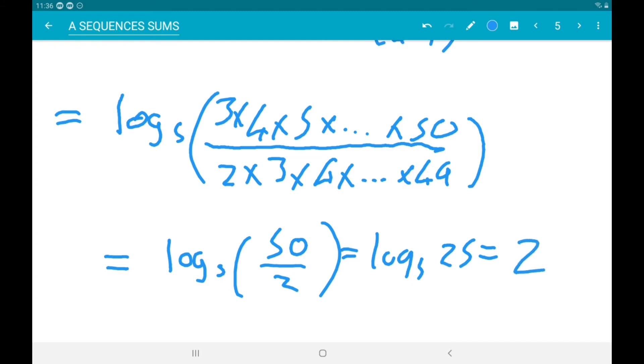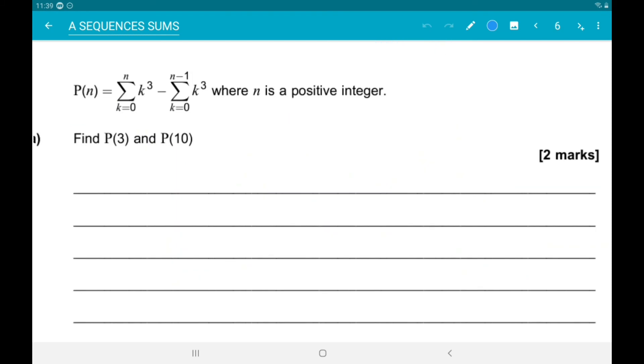Alright, final question. So p of n is the sum from k equals 0 to n of k cubed. So that's the sum of all the cube numbers up to n cubed minus the sum from k equals 0 to n minus 1 of k cubed. So that's subtracting the sum of all the cube numbers up to n minus 1 cubed. So this whole thing is actually just n cubed.